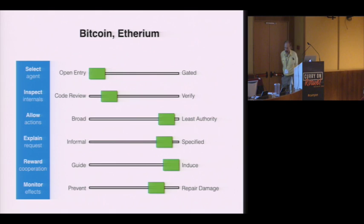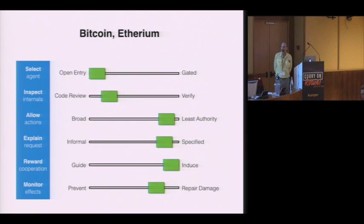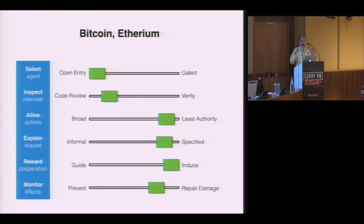Bitcoin and Ethereum form a very curious case because they push some of these sliders to the extreme. They push open entry to the extreme — these are known as permissionless systems, where nobody needs anybody's permission to participate and nobody can be evicted for bad behavior. In order to cope with completely open entry, they put a lot of pressure on incentive system design, pushing that to the opposite extreme, trying to create an architecture of incentives that by itself sustains the system over time. And they've been successful at that.